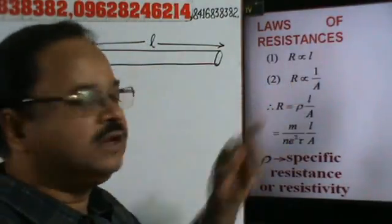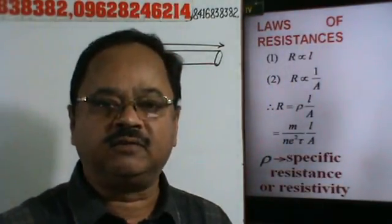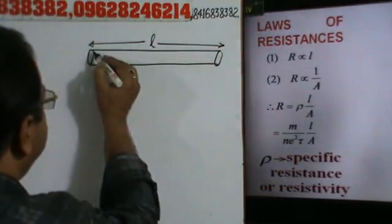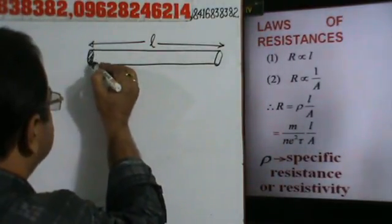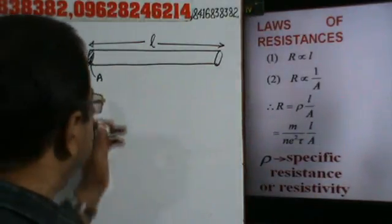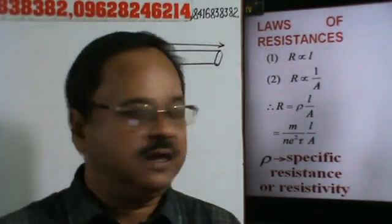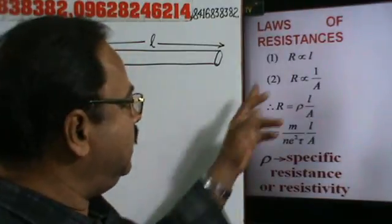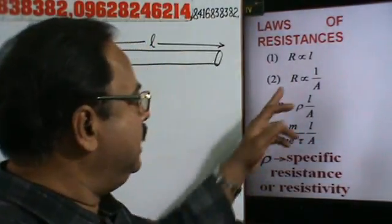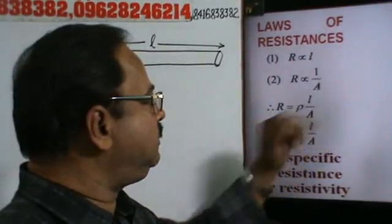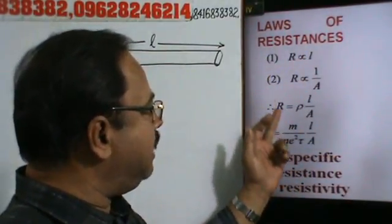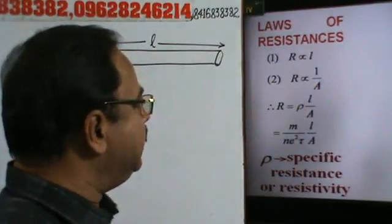Secondly, resistance of a conductor is inversely proportional to area of cross section. Suppose this area of cross section is A, then resistance of this conductor is inversely proportional to the area of cross section. Now, if we combine rule 1 and 2, we have R is proportional to L by A.